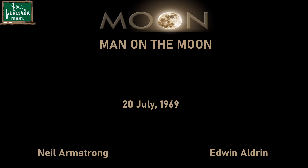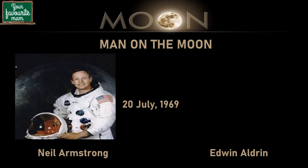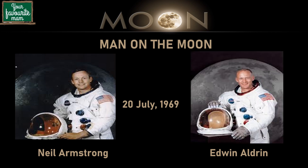A mission that many said was impossible became a reality on July 20th, 1969 for Neil Armstrong, the first man to walk on the moon, and Edwin Buzz Aldrin, who joined him 19 minutes later. Neil Armstrong and Aldrin walked around on the moon for three hours and created history.